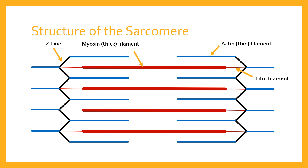Essentially, what happens in muscle contraction is that this sarcomere is structured so that when contraction occurs, the Z-lines are being pulled closer together. The two Z-lines — the black lines you can see on screen — will move closer together and close the gap in the centre of the sarcomere. The myosin filament itself doesn't move, but it reaches up and pulls the thin filament towards the centre line of the sarcomere, which is known as the M-line. The Z-lines are the bounds of the sarcomere, and when the myosin and actin filaments slide past one another, the Z-lines are pulled towards the centre.